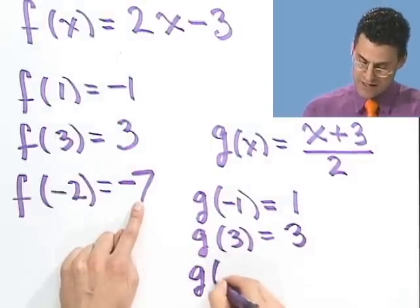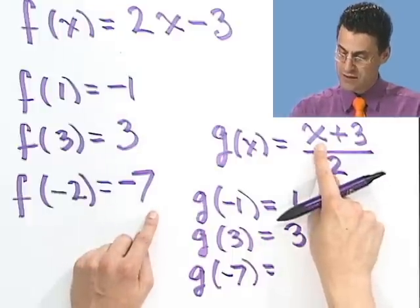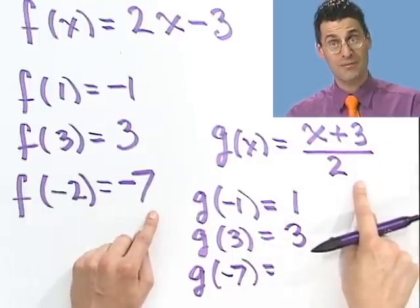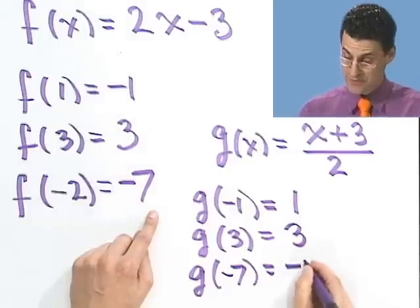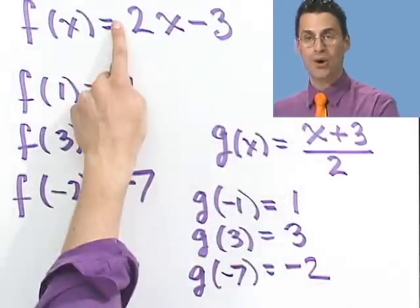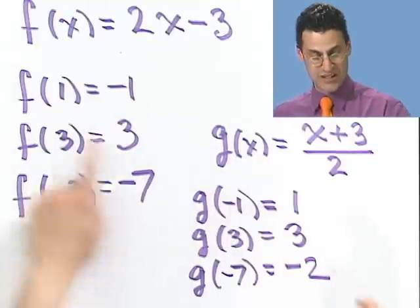What about this one? g of minus 7. Is it possible that we actually get negative 2? If I put in minus 7 here, plus 3 gives me a minus 4 divided by 2 is, in fact, negative 2. This is really cool. This function seems to decode that function, because if I take any output value and put it as input, I actually get back the original thing.